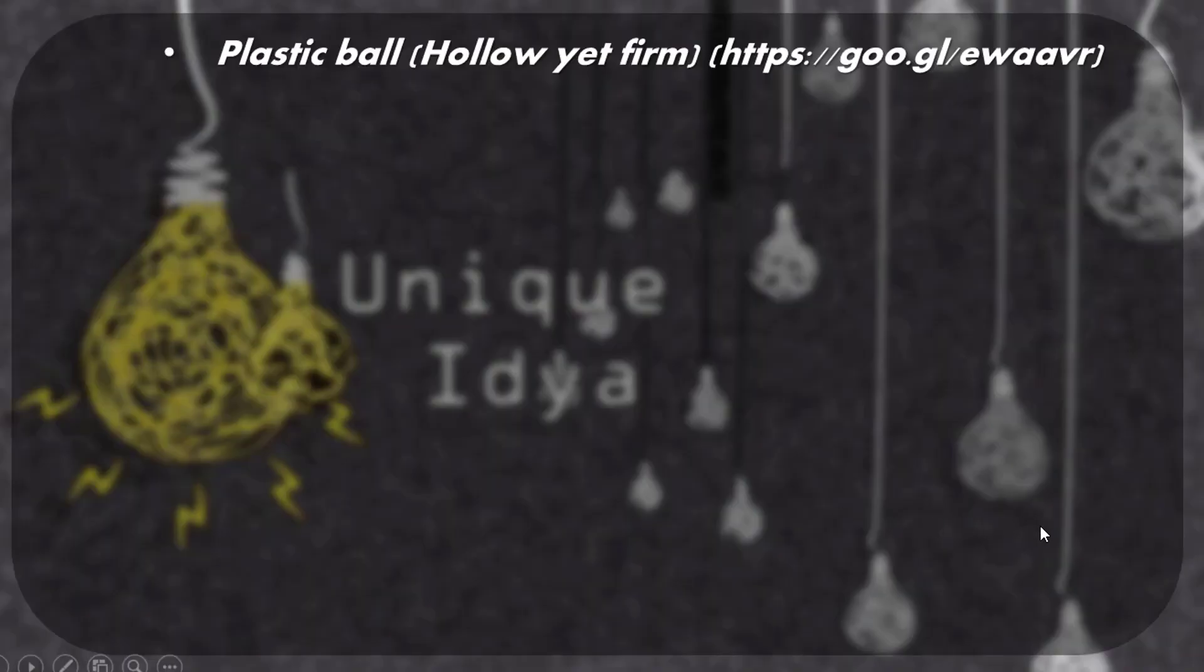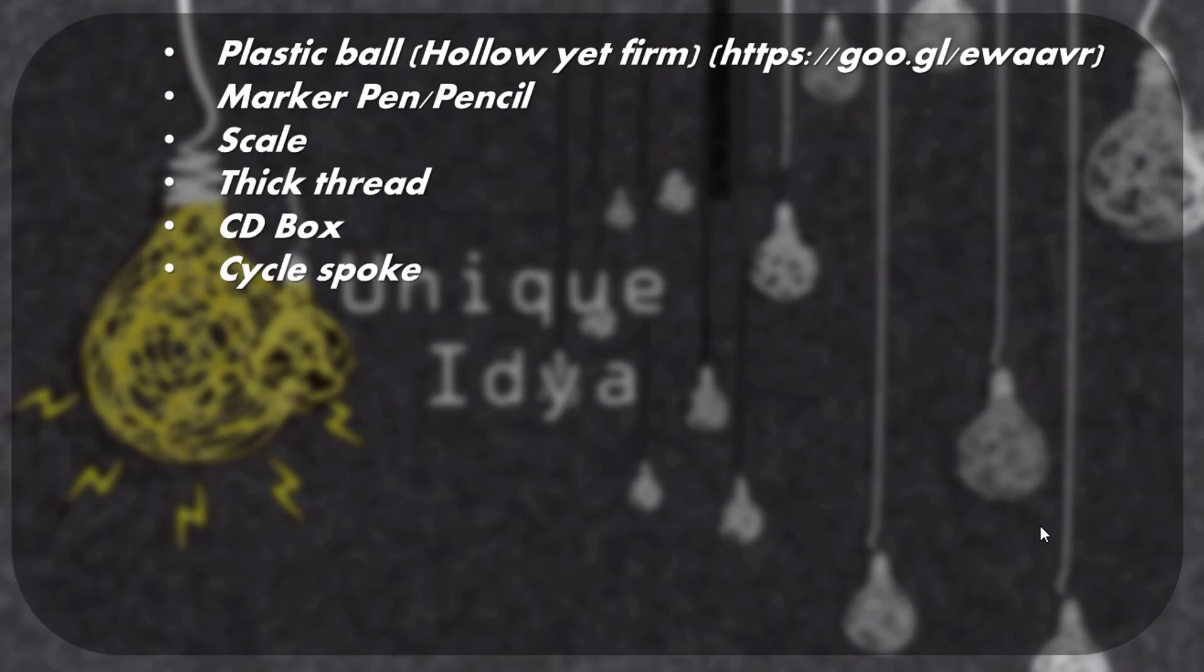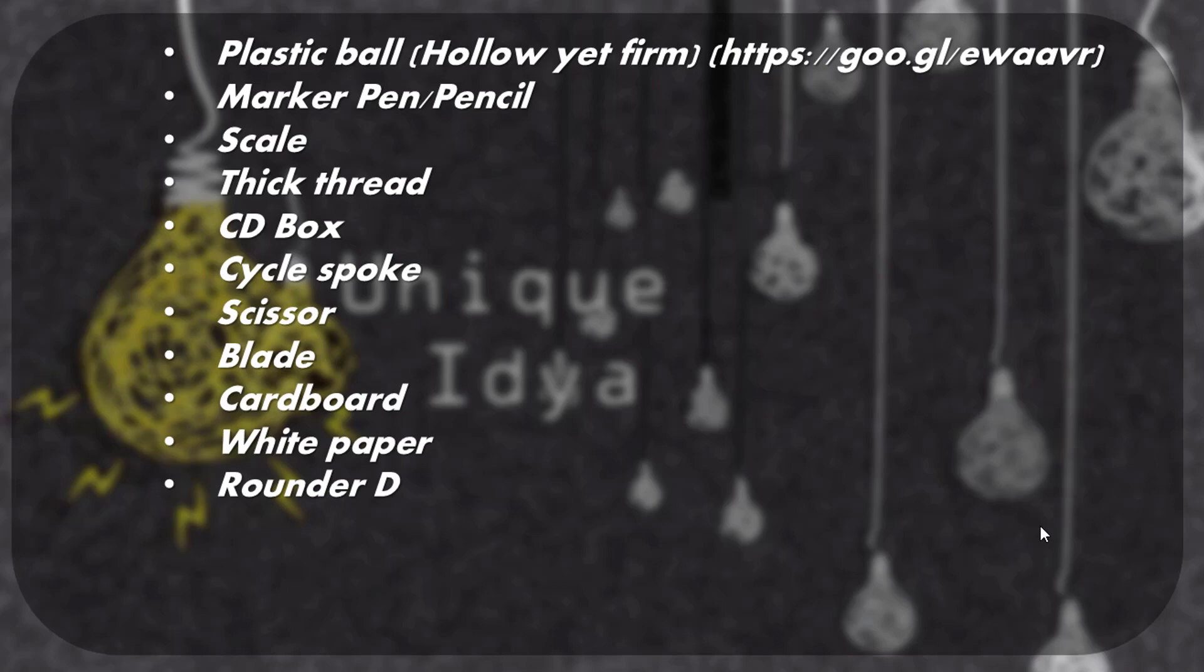The items you require for this project are plastic ball, marker pen, scale, thick thread, CD box, cycle spoke, scissor, blade, cardboard, white paper, rounder D, micropore, crayon pastels, paint and brush.